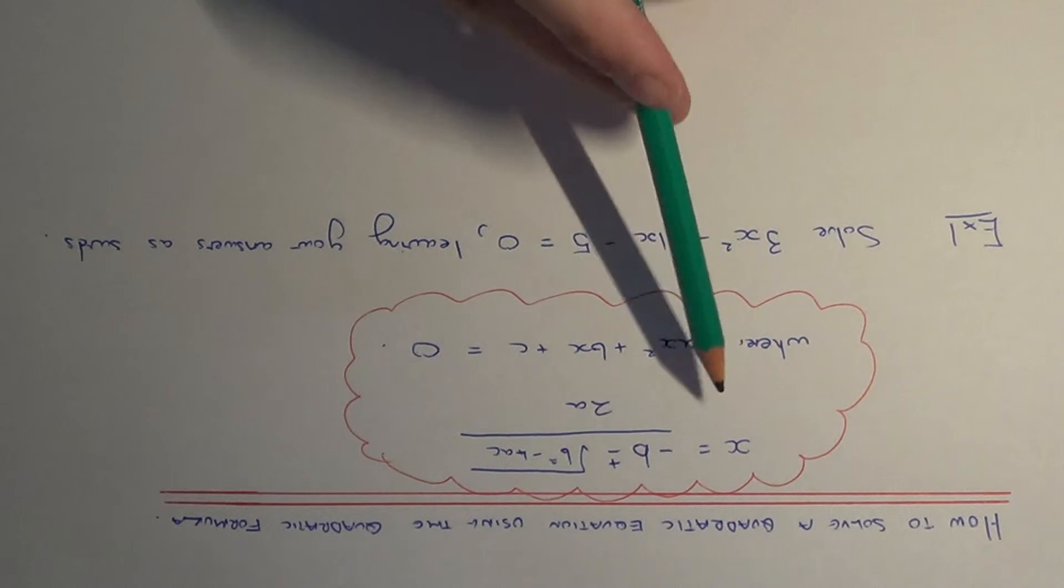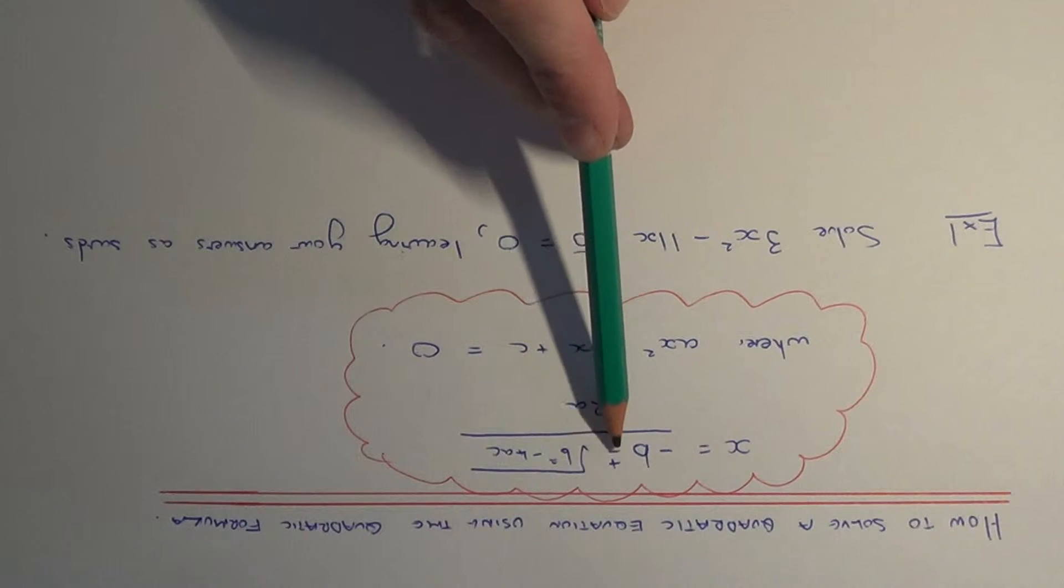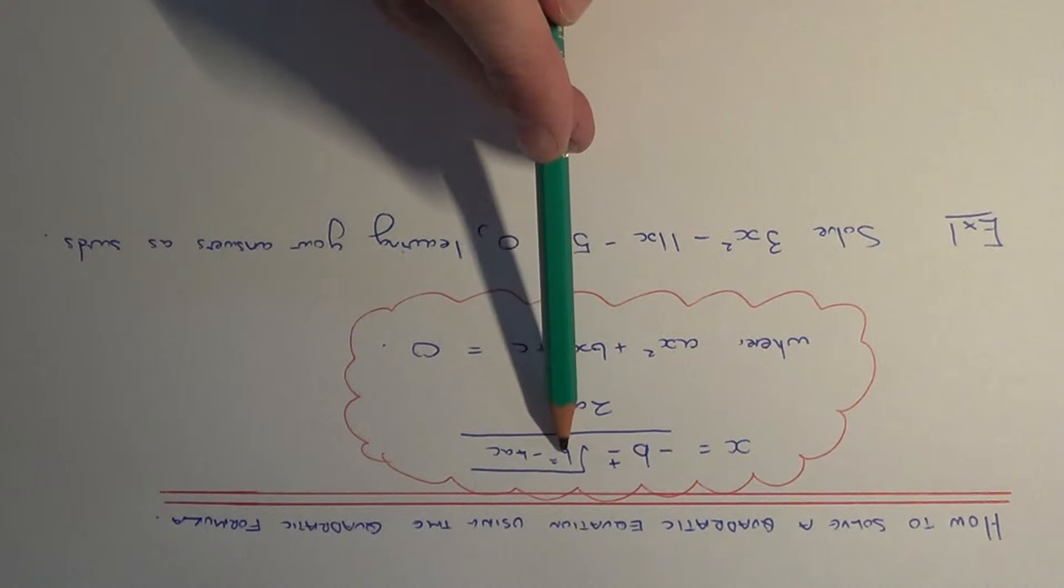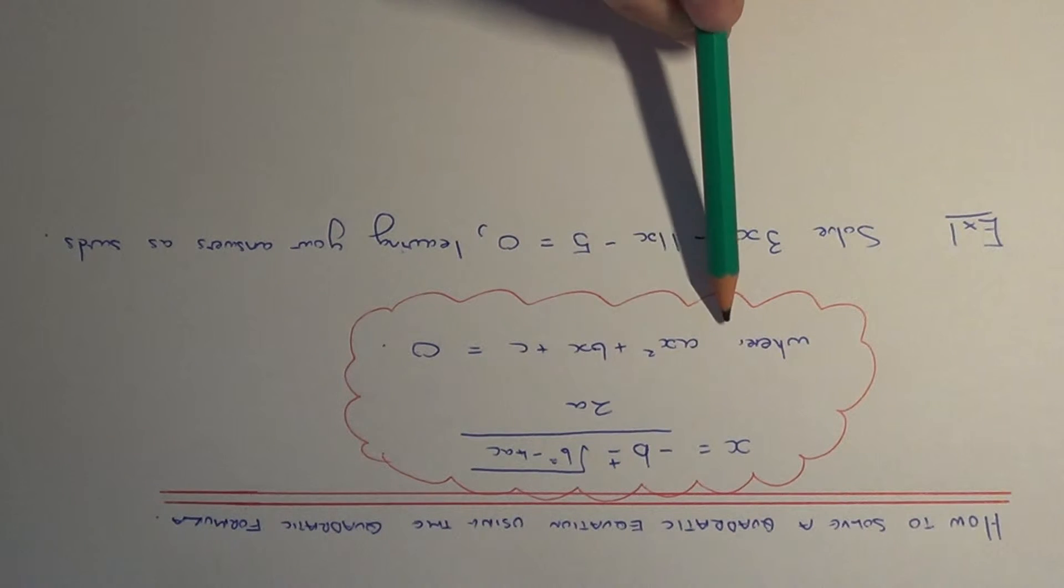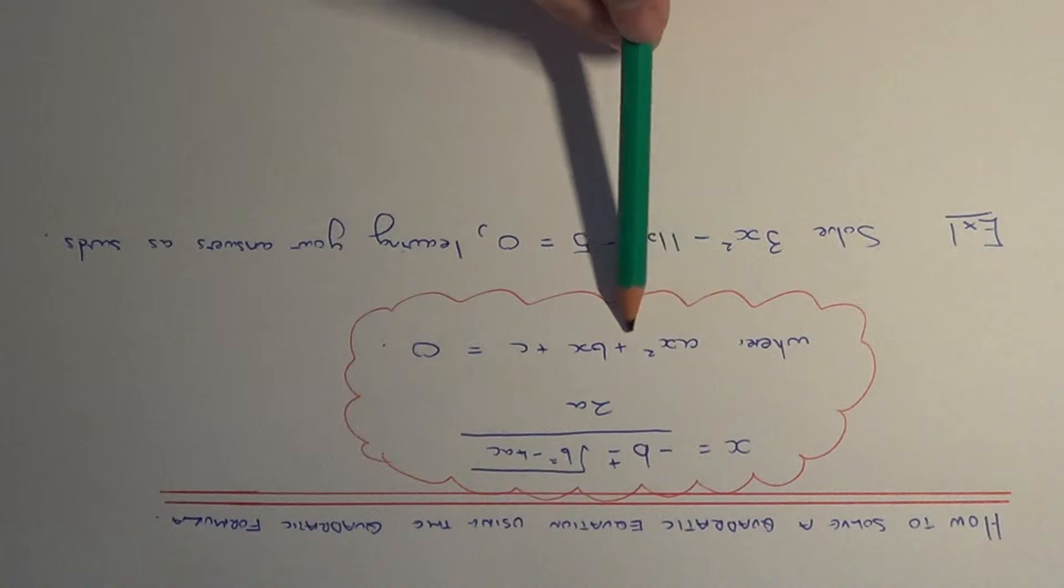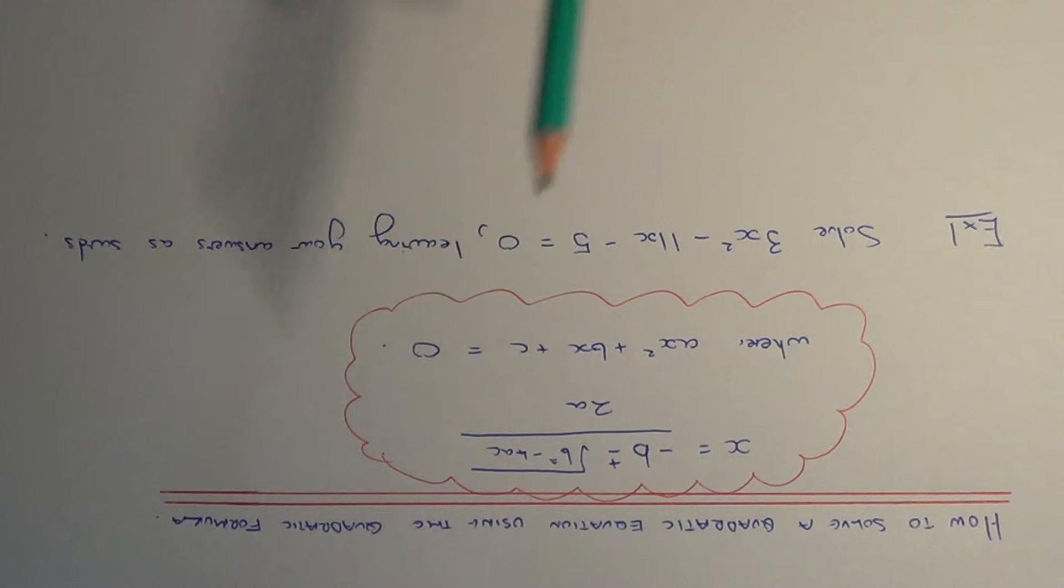First of all, you need to know the quadratic formula: minus b plus or minus the square root of b squared minus 4ac, all divided by 2a, where you should have the quadratic in the form ax squared plus bx plus c equals 0.